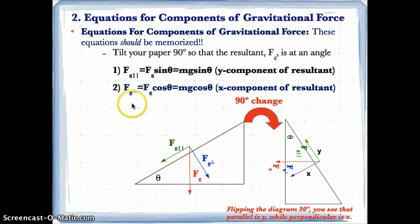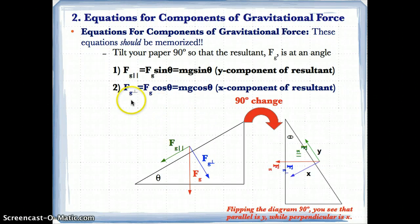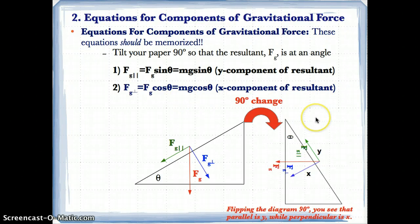Fg perpendicular is the perpendicular component of the gravitational force that is perpendicular to the incline itself. Fg perpendicular, you have to memorize, is equal to Fg cosine theta, which is also equal to Mg cosine theta, because Fg equals mass times acceleration due to gravity. This is the x component of the resultant.